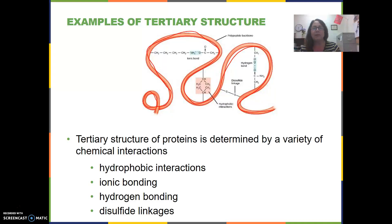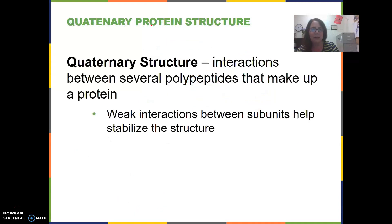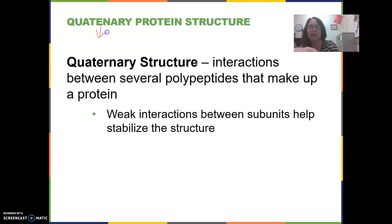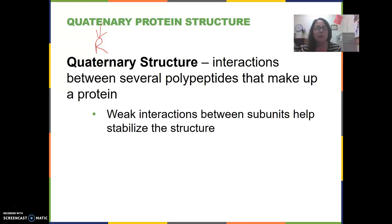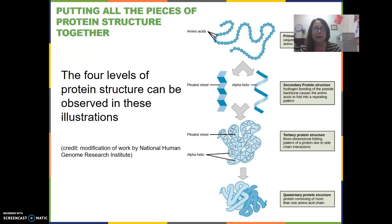That's what I mean by the final three-dimensional shape. And that shape is determined by hydrophobic interactions, ionic bonding, hydrogen bonding, and disulfide linkages. The quaternary structure is when there are several proteins that have formed tertiary structures and are joined together.